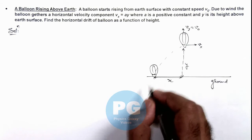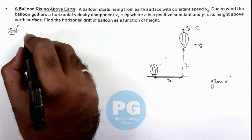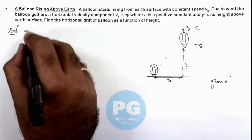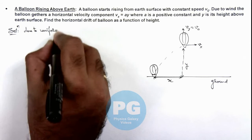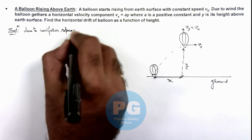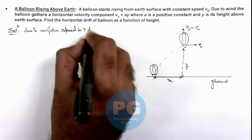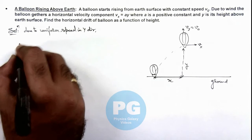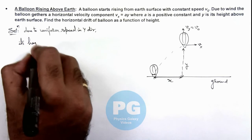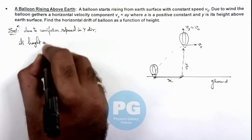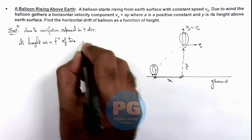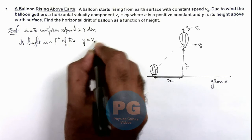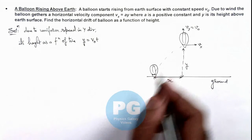Now in this situation here we can write, due to uniform speed in y direction, its height as a function of time can be given as y equals v not times t, as v not is a constant.